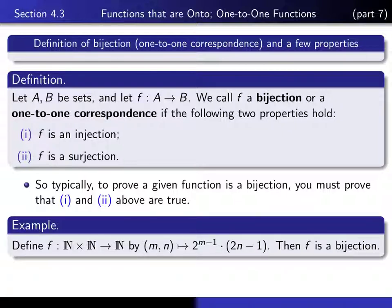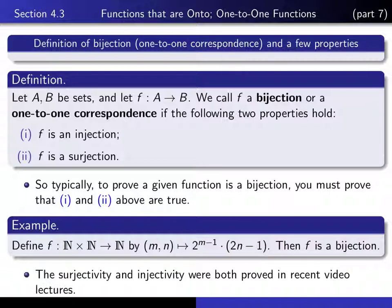Here's an example of a bijection. If we define f from ℕ × ℕ into ℕ by f(m, n) = 2^(m−1) × (2n − 1), then that is a bijection, because we proved the surjectivity and the injectivity of this function over the course of two lectures.